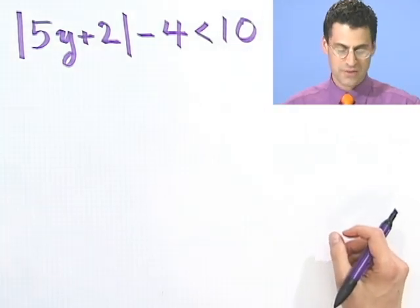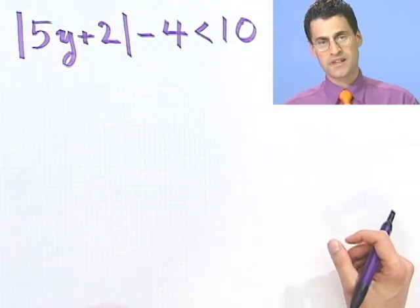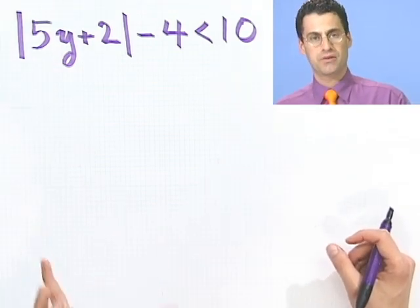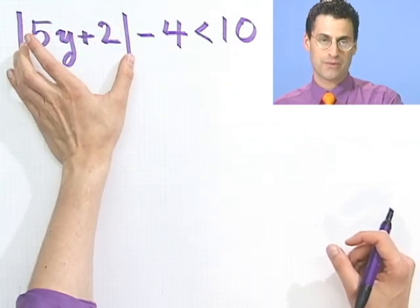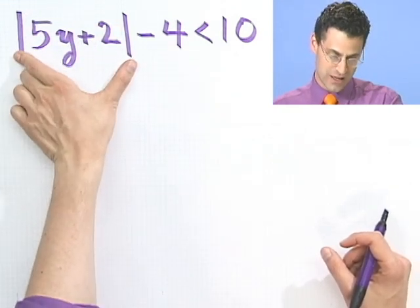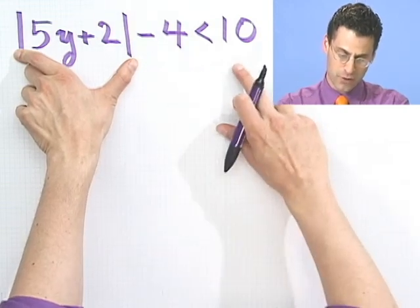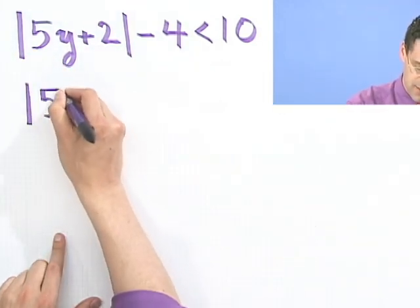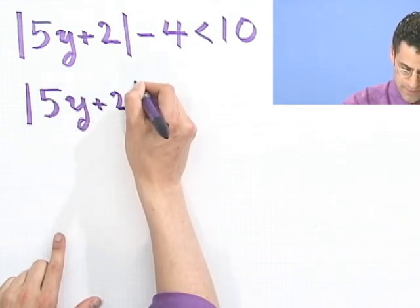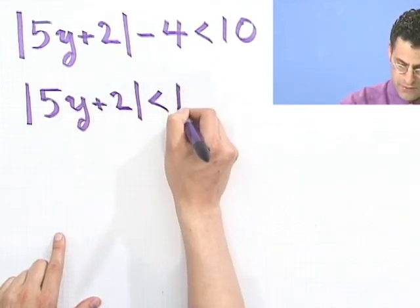And now the issue is, how do you deal with that? Well, the first thing that I do is just get the absolute value by itself. OK, it's like we see often as a theme. Let's get the thing that we're concerned about, or that's sort of a unit, by itself. So I'm going to bring this 4 over and make it therefore 14. And I have absolute value 5y plus 2 would be less than 14.